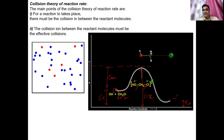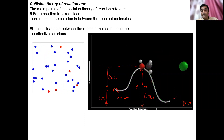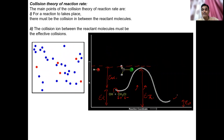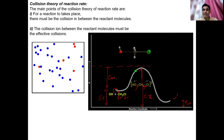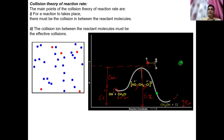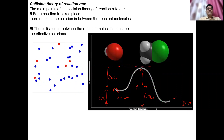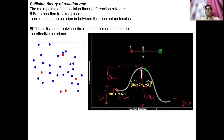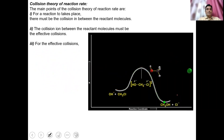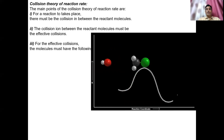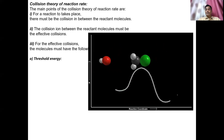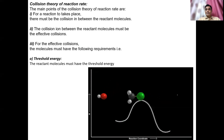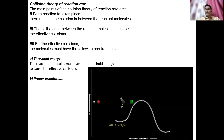For effective collision: minimum amount of energy is required — that is the threshold energy — and extra energy from outside is the activation energy. Without meeting both conditions, effective collisions will not occur. So for a reaction to take place: there must be collision between reactant molecules, and those collisions must be effective.